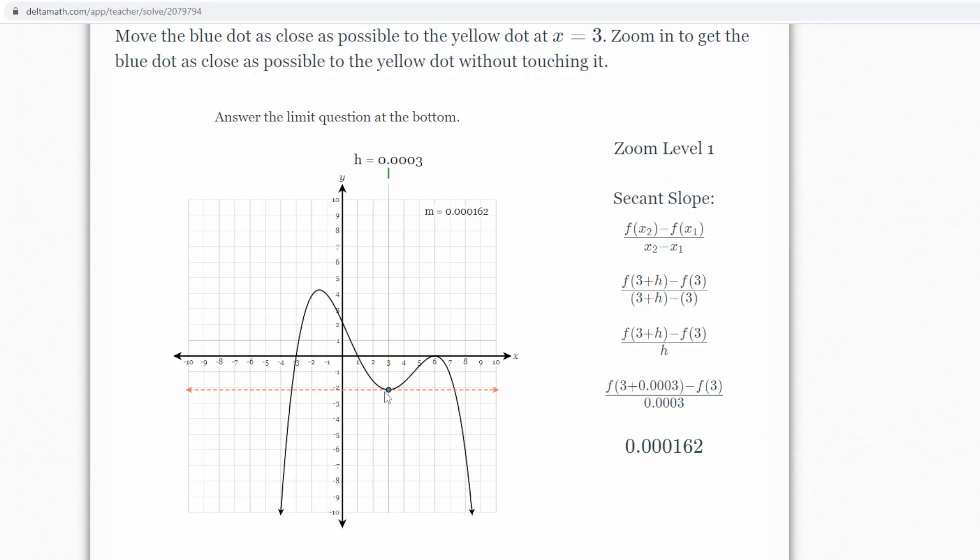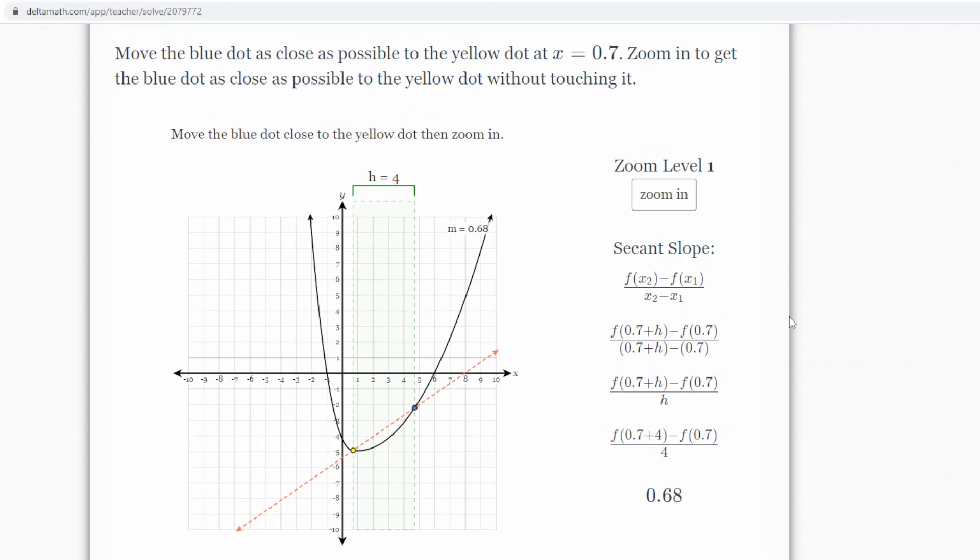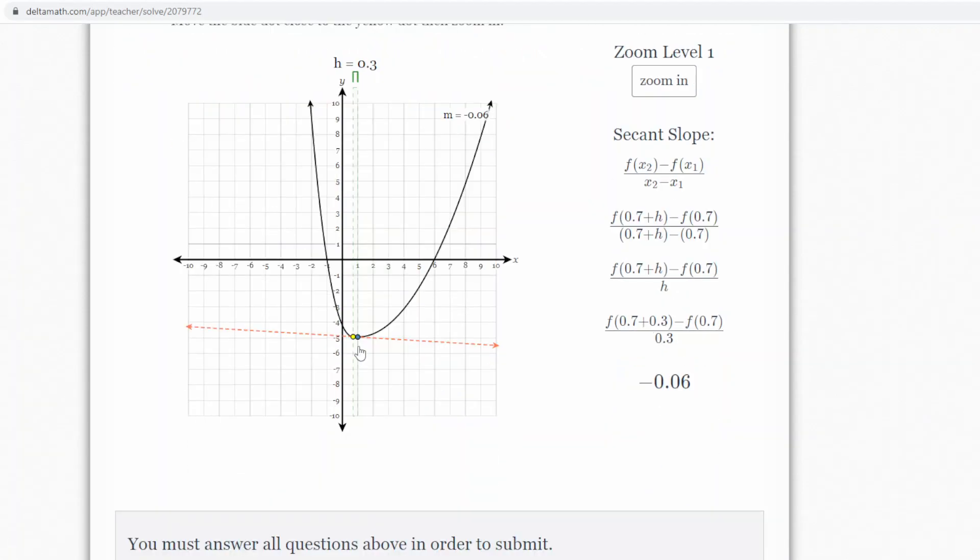Okay, let's try one more. We're looking at when x is 0.7. We're going to zoom in. So move the blue close to the yellow.